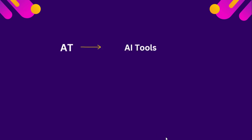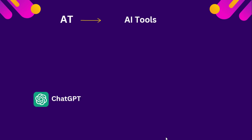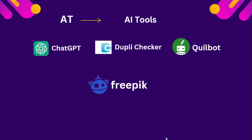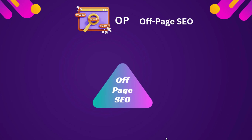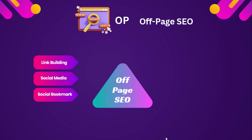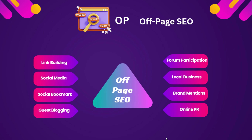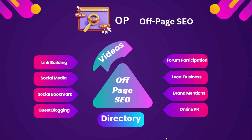For AI Tools, we are going to use ChatGPT, Duplichecker, Quillbot, and Freepik. For Off-Page SEO, we need to focus on link building, social media, social bookmarks, guest blogging, forum participation, local business listings, brand mentions, online PR, videos, and directories.